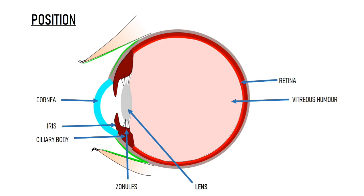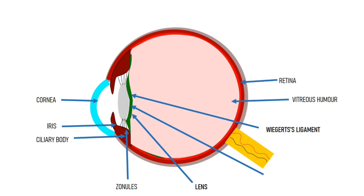The zonules are attached to the ciliary body. There is a potential space between the posterior lens capsule and the anterior hyaloid face of the vitreous. That potential space is known as Berger's space, or retrolenticular space.